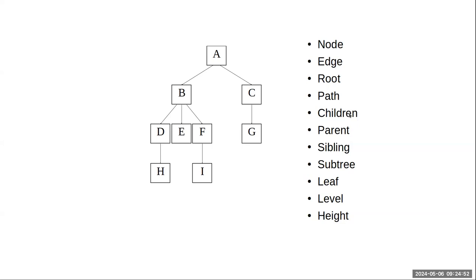Children are the descendants below a particular node — G is the child of C; D, E, and F are the children of B; B and C are direct children of A. The parent is the node they are children of — D, E, and F have parent B; B has parent A. All nodes have parents except for the root node, which has nothing above it.